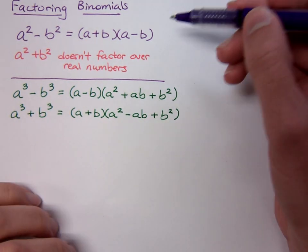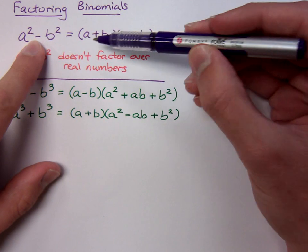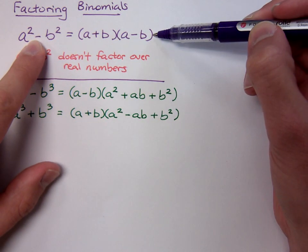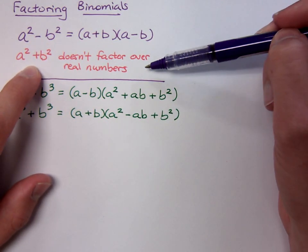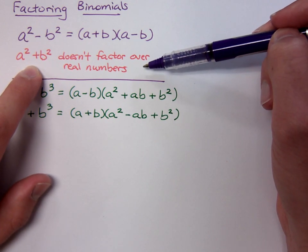This first guy is one of the best guys ever, it's the difference of squares. The difference of two squares would factor as a plus b times a minus b. a² + b² doesn't factor using real numbers. Later on we'll find out how this does factor. We see that it involves imaginary numbers, complex numbers.